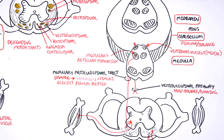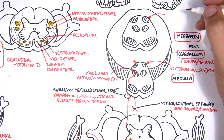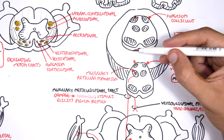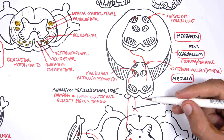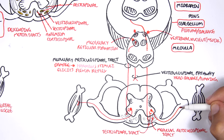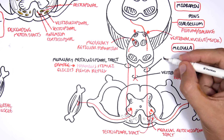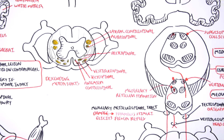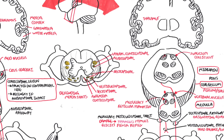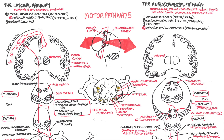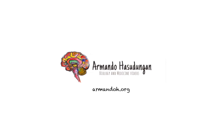The last tract is the tectospinal tract, which originates from the midbrain in an area known as the superior colliculus. The tectospinal pathway descends down, crosses over, descends again, and lands on the tectospinal tract before synapsing with the second neuron, which targets an axial muscle. The tectospinal tract is responsible for the orientation response — orientating yourself in the world. To summarize, the motor pathways are divided into the lateral pathways and the anterior medial pathway. The corticospinal tract is probably the most important because it governs voluntary control.